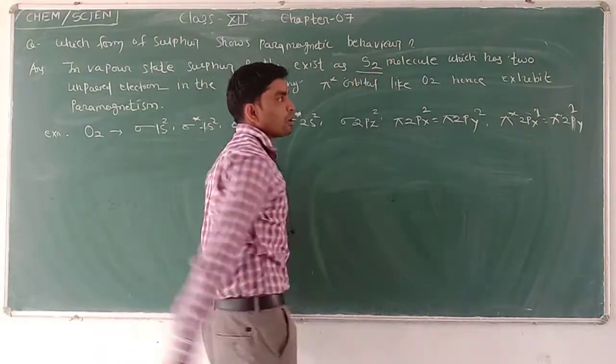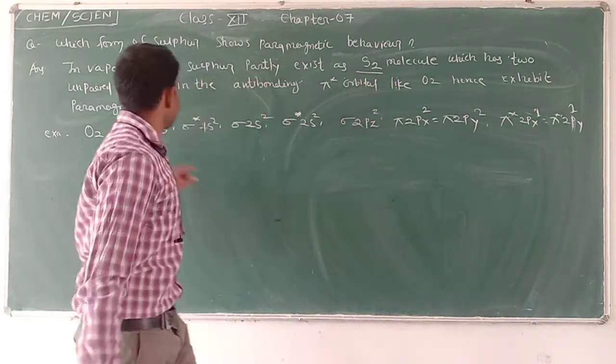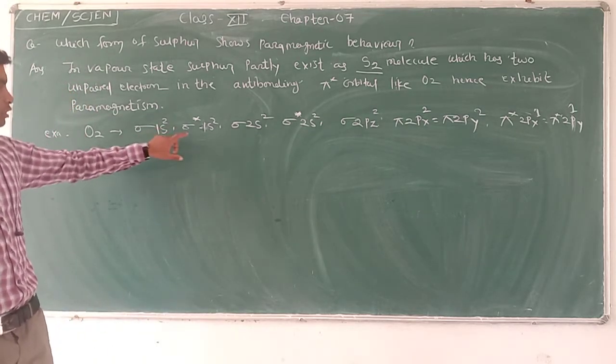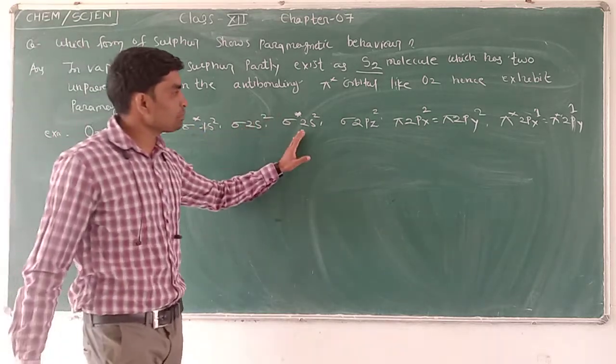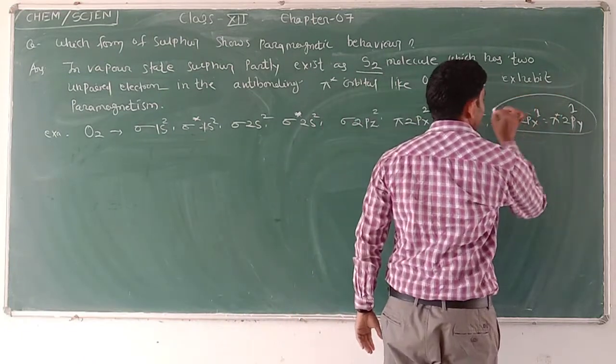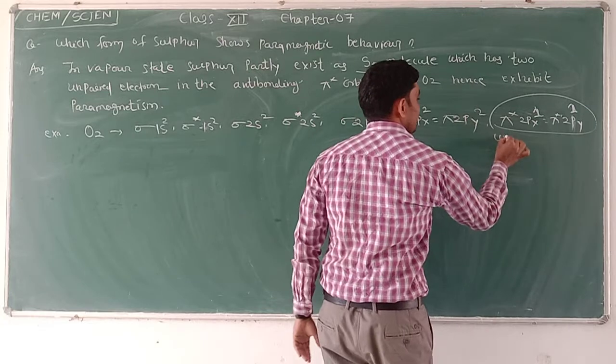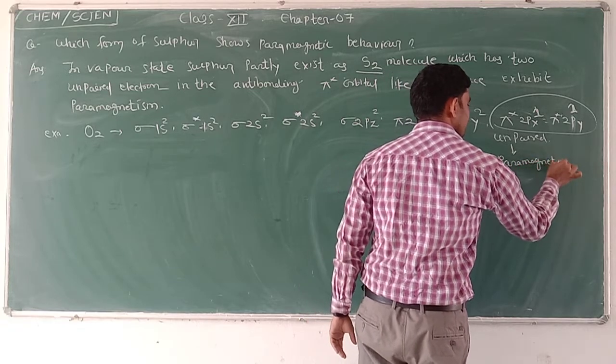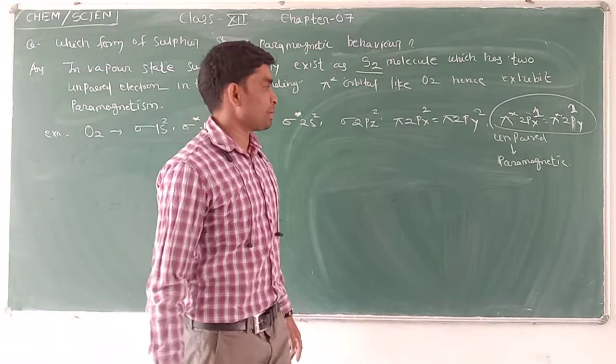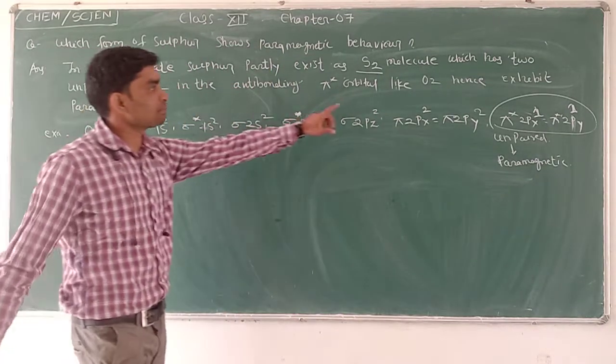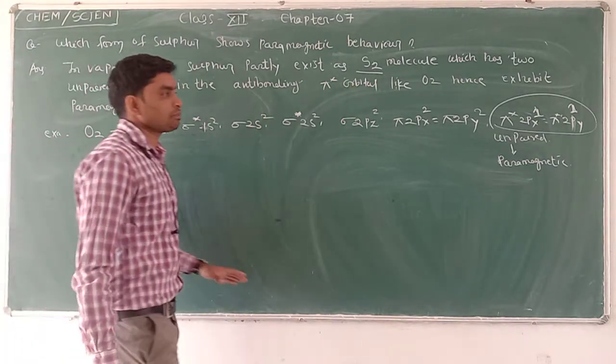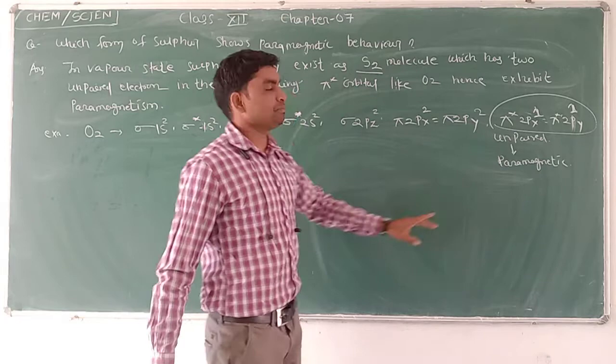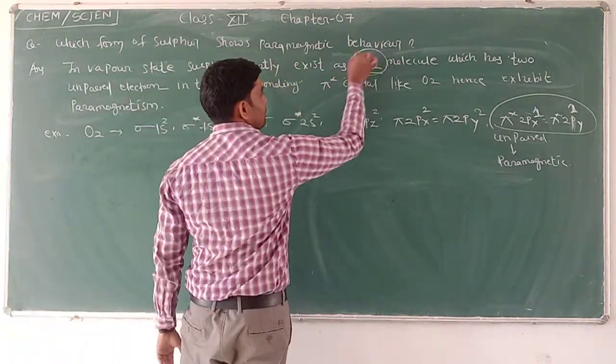For O2, this is the molecular orbital diagram. Sigma and pi bonding, anti-bonding orbitals. In the last pi anti-bonding position, there are two unpaired electrons, making it paramagnetic. Similarly, for H2S in the oxygen group, there are unpaired electrons making it paramagnetic.